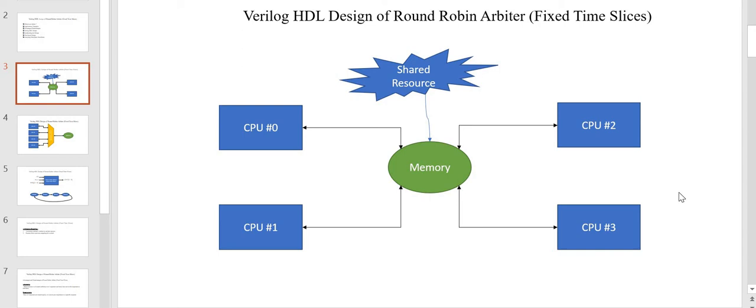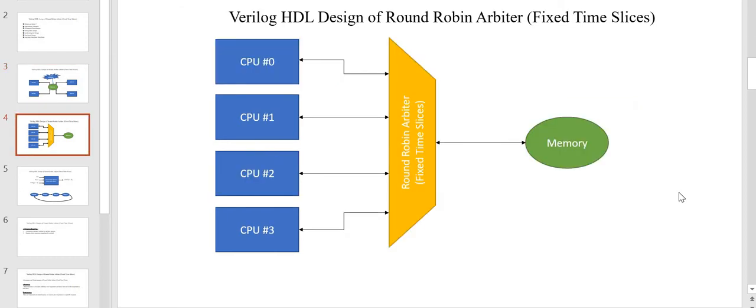Here you can see that there are four CPUs trying to access a common shared resource which is memory. The memory can be accessed only by a single CPU at a time. To enable this mechanism we need some additional hardware — an arbiter. Here we are going to use a round robin arbiter where the four CPUs will get access to the memory one by one in a round robin fashion.